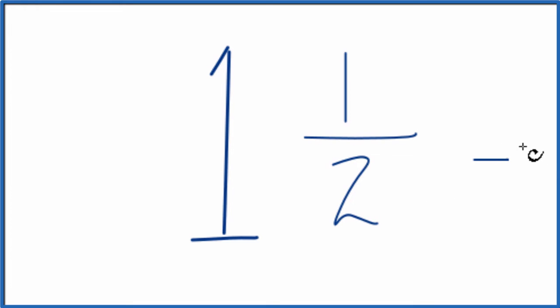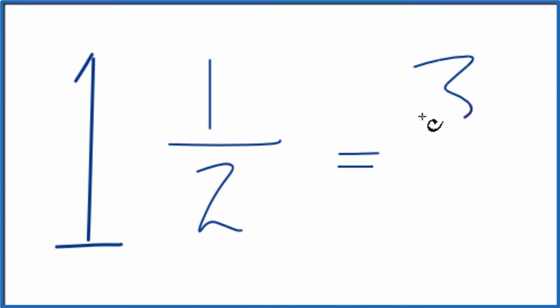So we could say that 1 times 2, that's 2, 2 plus 1 is 3, and then we keep the 2 here. So 3 over 2, that's the same thing as 1 and a half.